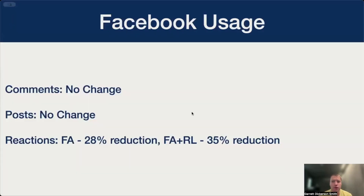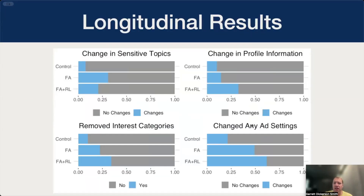We additionally measured users' behavior over time to uncover any changes in how users interacted with Facebook after watching the videos. We couldn't detect a significant change in users' commenting and posting rate. However, we did find that users in the fear appeal condition reduced their number of weekly reactions by 28%, and the fear appeal with reflective learning condition led to a 35% reduction in weekly reactions. In our data collection tool, we collected the state of various advertising controls. This allowed us to detect any changes to these settings, as well as when these changes took place. Interestingly, we found a difference between the fear appeal and fear appeal with reflective learning videos. Participants that watched the fear appeal-only video were more likely to opt out of viewing ads related to those sensitive topics, while those that saw the reflective learning content were more likely to engage in proactive measures, such as removing the advertiser's ability to target them based on their profile information.